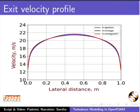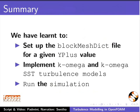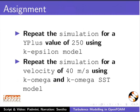The slide shows the exit velocity profile for all three turbulence models. With this, we have come to the end of the tutorial. In this tutorial, we have learnt to set up the block mesh dict file for a given y-plus value, implement k-omega and k-omega SST turbulence models, and run the simulation. As an assignment, repeat the simulation for a y-plus value of 250 using the k-epsilon model, and repeat the simulation for a velocity of 40 meters per second using k-omega and k-omega SST models.